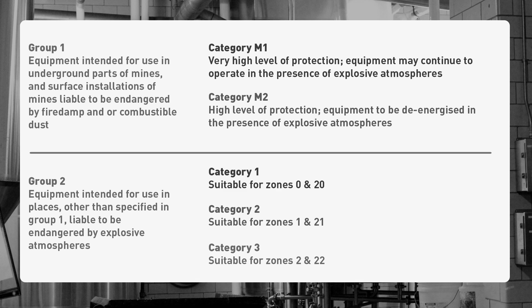Group 2 ATEX equipment is intended for use in any other ATEX rated environment other than specified in Group 1. Group 2 equipment is split into three categories: Category 1, suitable for zones 0 and 20; Category 2, suitable for zones 1 and 21; and Category 3, suitable for zones 2 and 22.